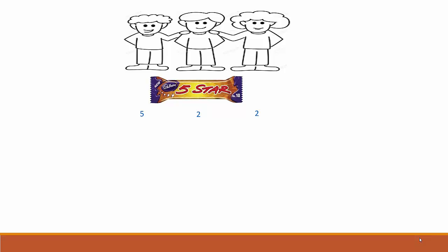Let's take two chocolates from the first friend and give one to each of the others. So now each of them will have three chocolates. So when we distribute the chocolates equally among all these friends, we see that each of them gets three chocolates. The number three is the average number of chocolates these friends have.